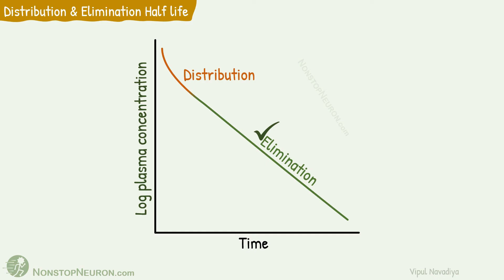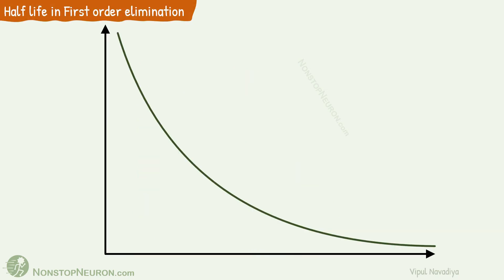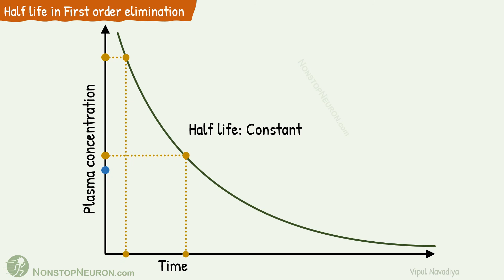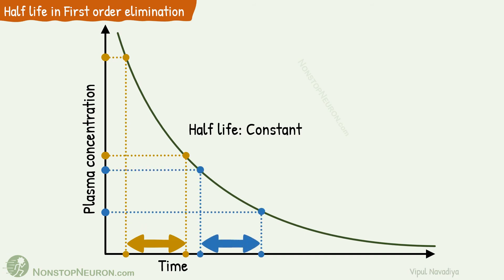Now let's understand half-life for first-order and zero-order elimination. Starting with first-order elimination. In this graph, we have time on the x-axis and plasma concentration on the y-axis. In first-order kinetics, rate of elimination is directly proportional to plasma concentration. As we can see, at higher concentration the level of drug is falling faster, and at lower concentrations it is slow. Because of this, plasma half-life remains constant in first-order kinetics. To confirm this, let's measure half-lives for two different concentrations. For the first point, the half concentration and time required for this 50% fall are measured. For the second point, the same measurement is taken. As you can clearly see, the time required in both cases is equal. Thus, plasma half-life is constant in first-order elimination kinetics.